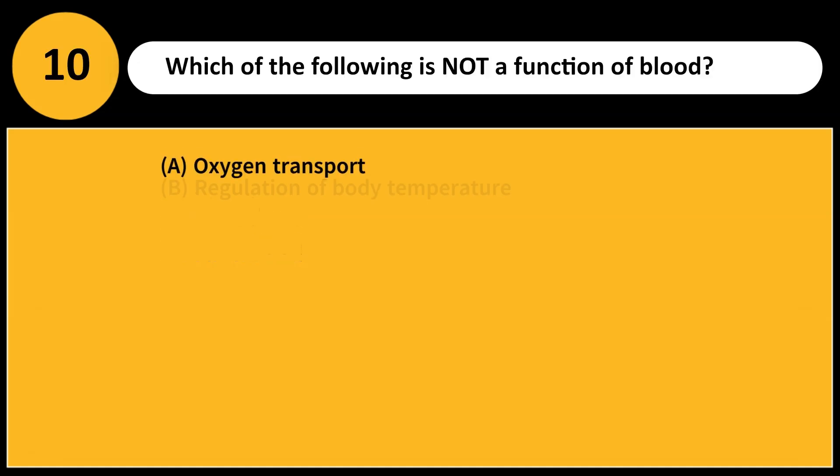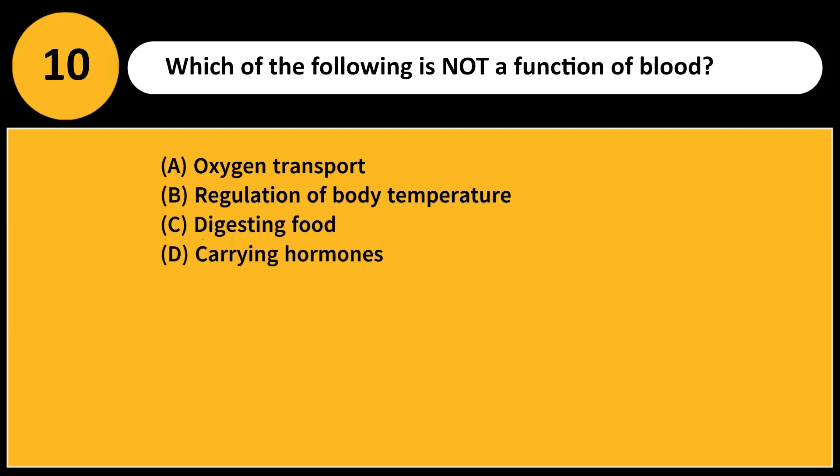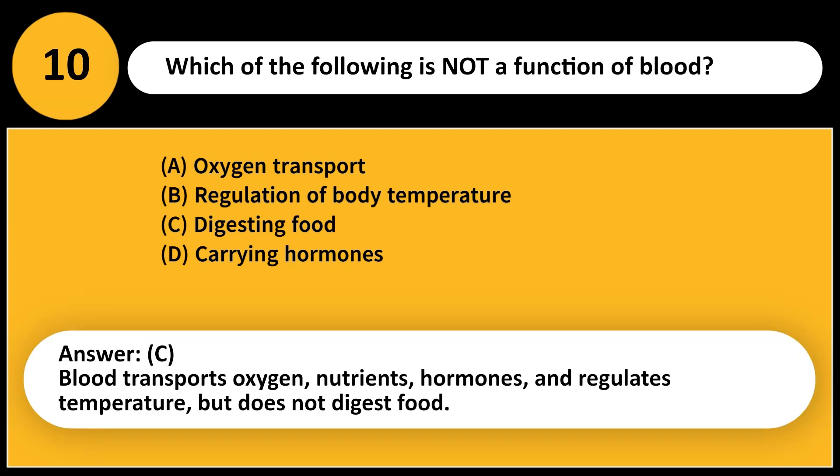Which of the following is not a function of blood? A. Oxygen transport. B. Regulation of body temperature. C. Digesting food. D. Carrying hormones. Answer: C. Blood transports oxygen, nutrients, and hormones, and regulates temperature, but does not digest food.